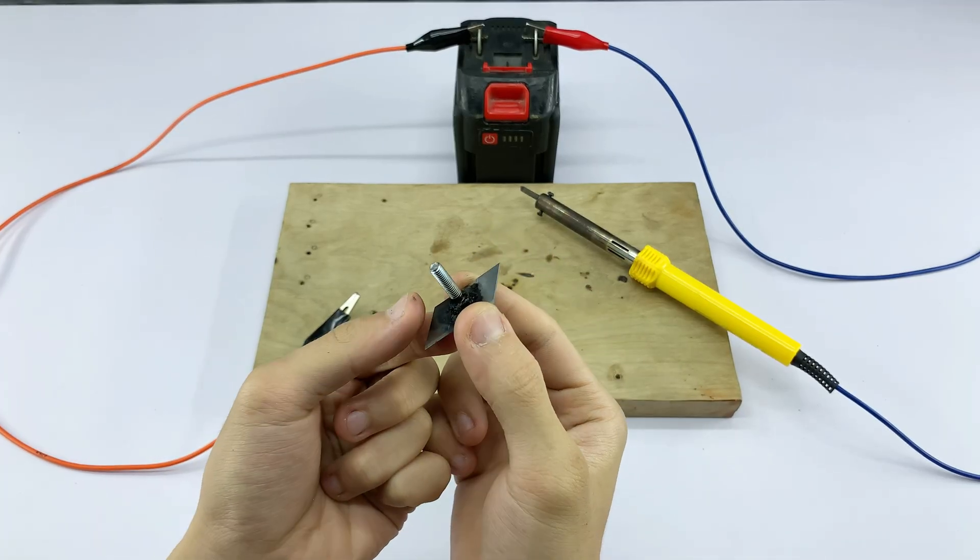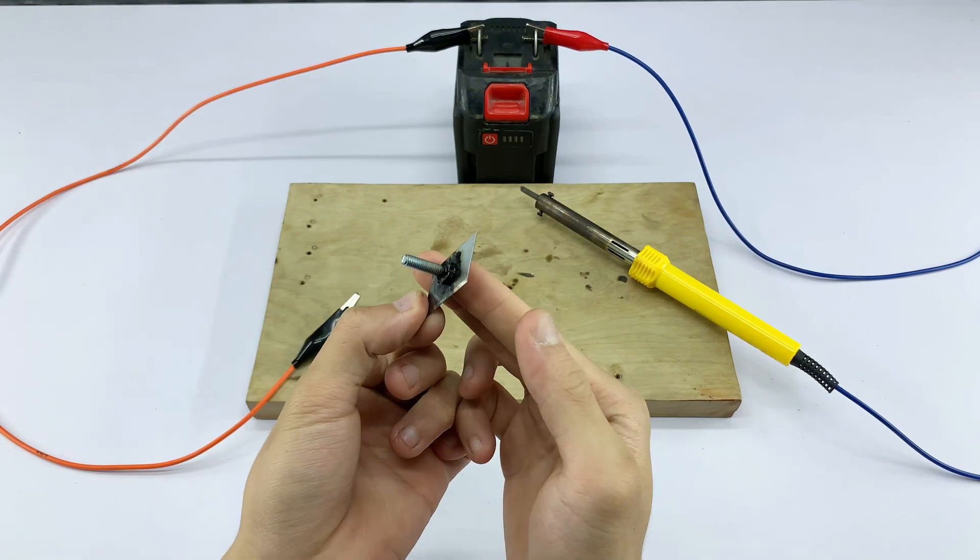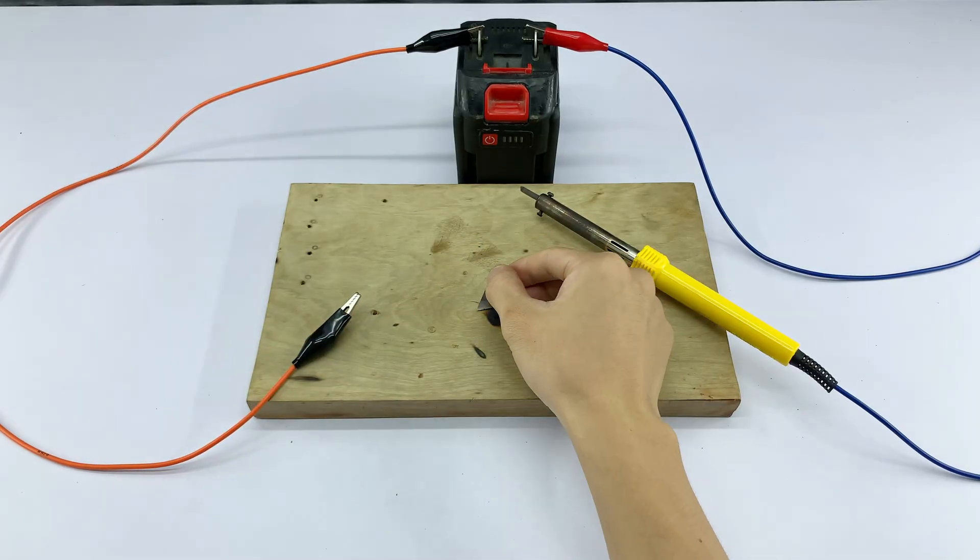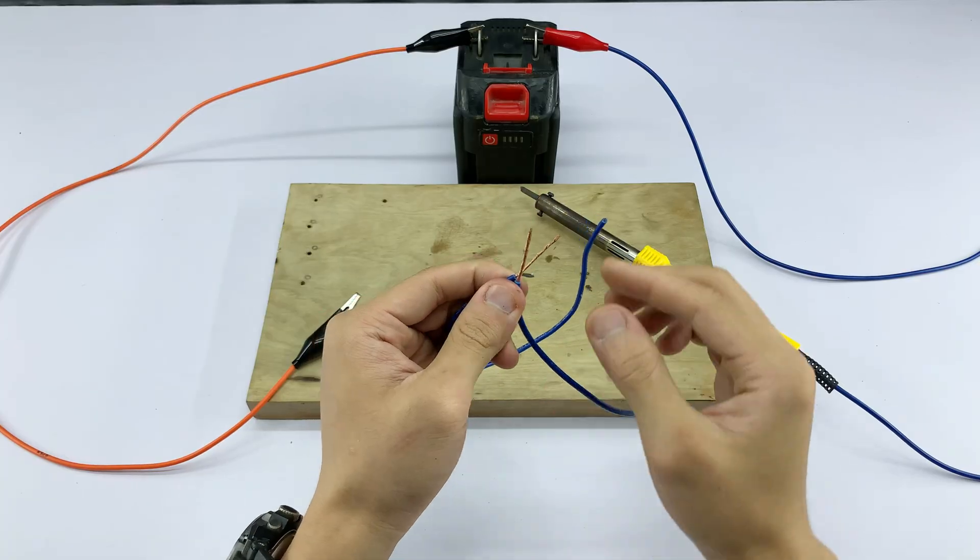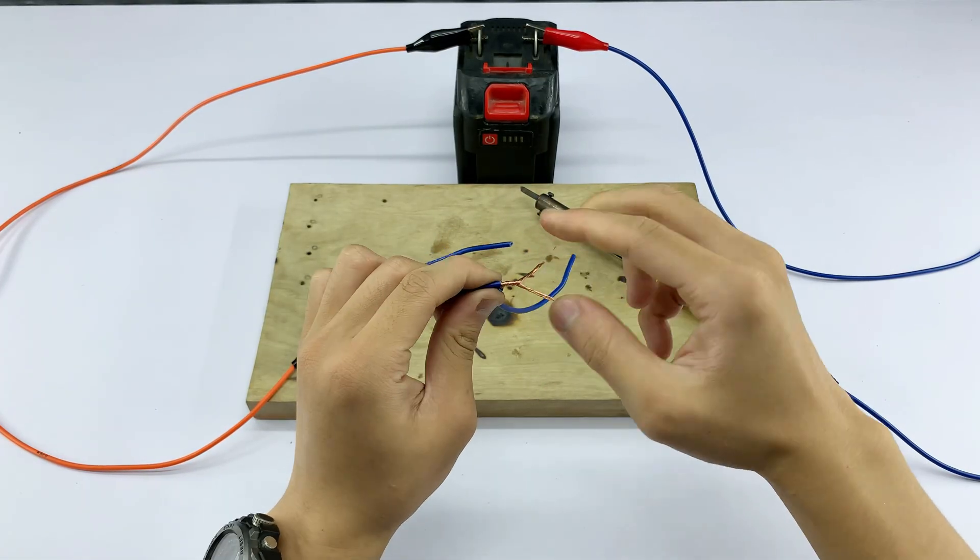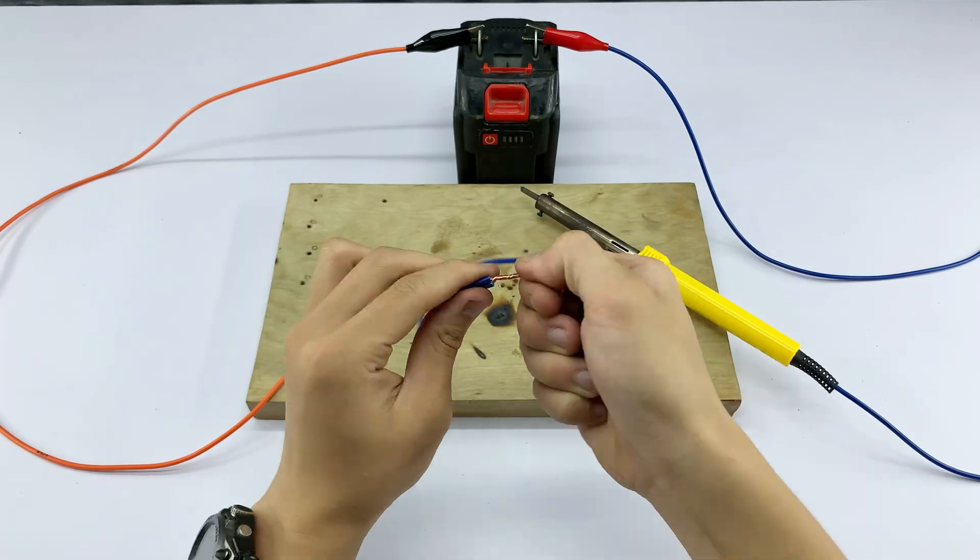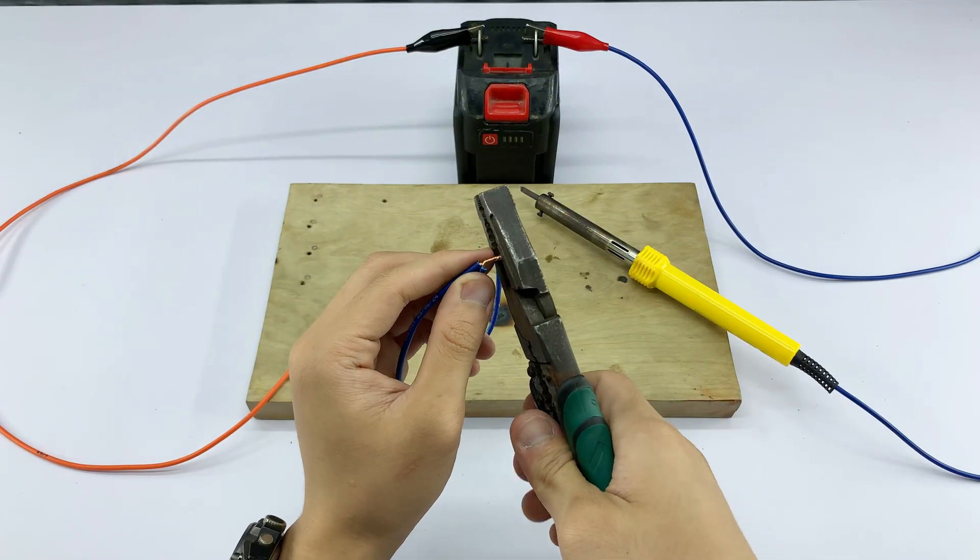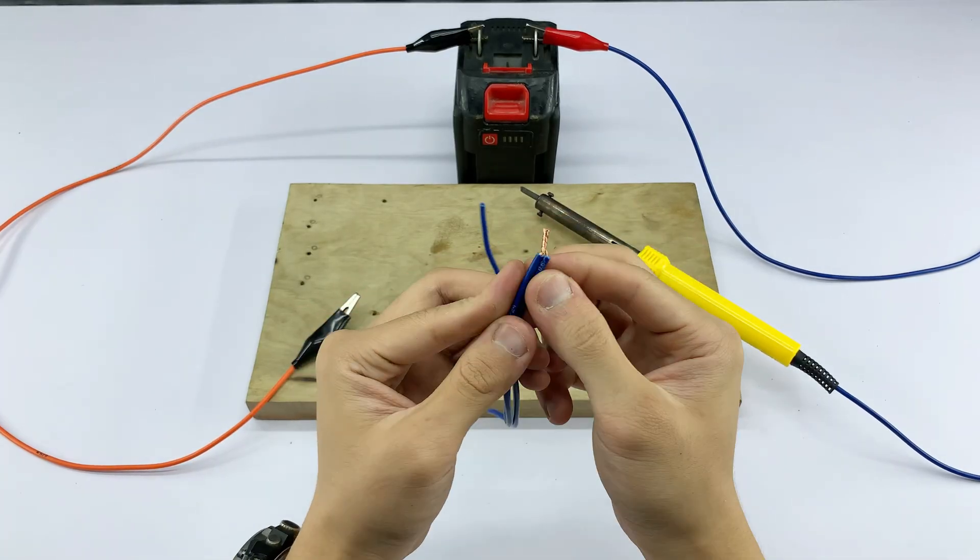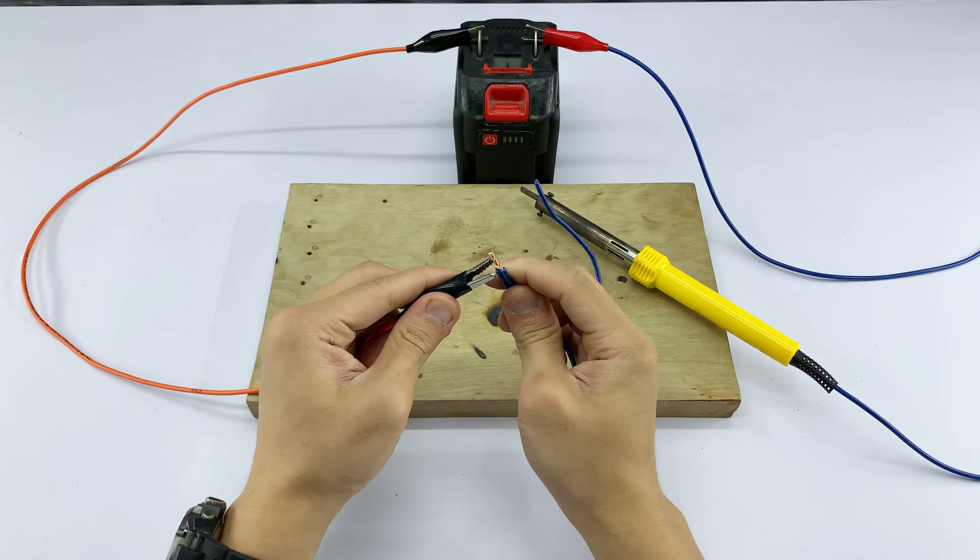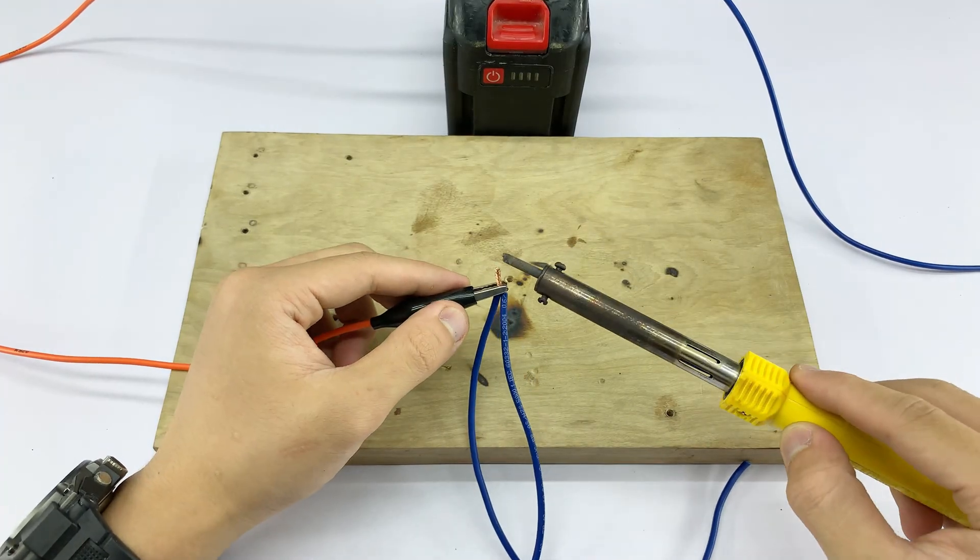I'm also going to show you how it interacts with other materials. Now, I'll demonstrate how this powerful device can wire. I'm connecting some small wires to the battery pack with alligator clips and using a homemade soldering iron. The wires melt and connect almost instantly.